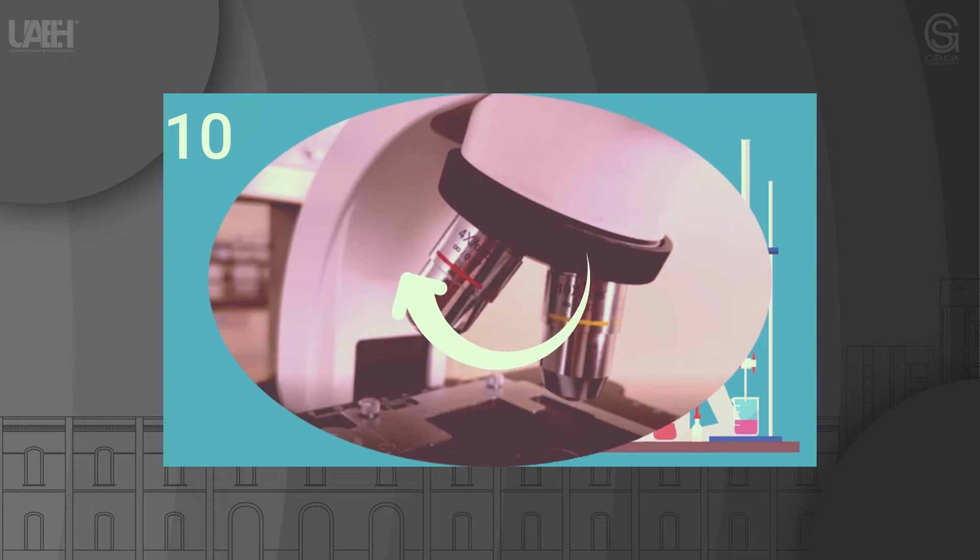Step 10: From this point, if you want to observe the sample with a higher magnification, you can select the next objective using the revolver. A small adjustment of the fine adjustment screw may be necessary to maintain the focus. If you cannot focus the sample, you can repeat the procedure described from step 3 with the new objective.